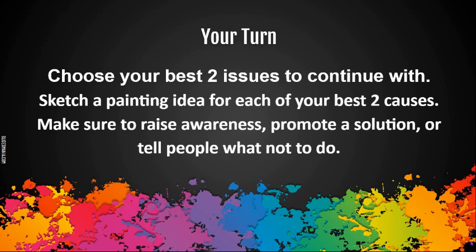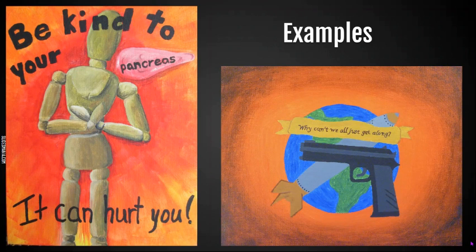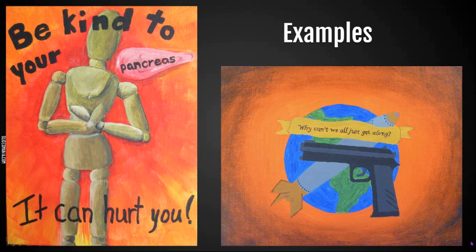Now choose your best idea of the two and turn to your sketchbook. Make a full page, fully colored sketch of your painting plan. Use that whole page — it's approximately the size of your canvas — so draw as big as you plan to paint. Make sure you include text, imagery, and have your specific colors in mind that you're going to mix. For example, with my pancreas idea: 'Be Kind to Your Pancreas, It Can Hurt You' — the background has a red starburst radiating pain, and an art mannequin holding the pancreas area. A student example shows weapons in front of a globe asking 'Why Can't We All Just Get Along?'